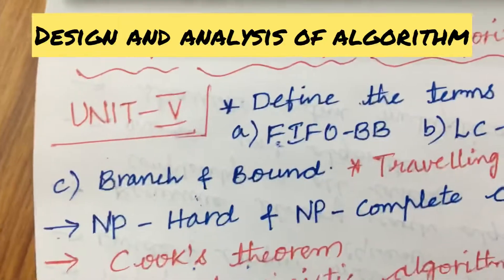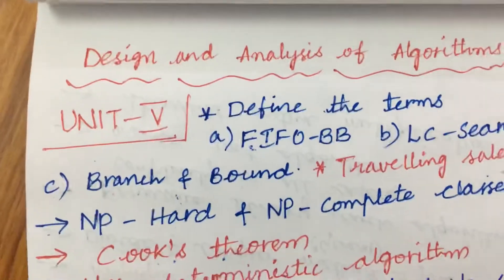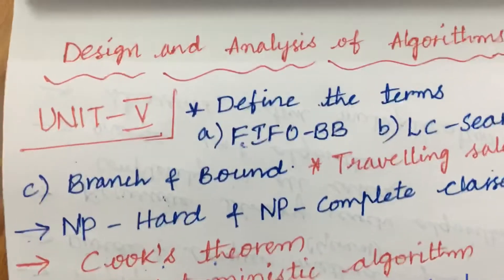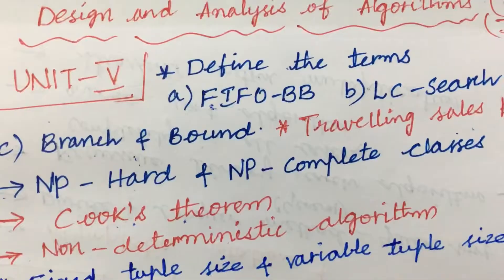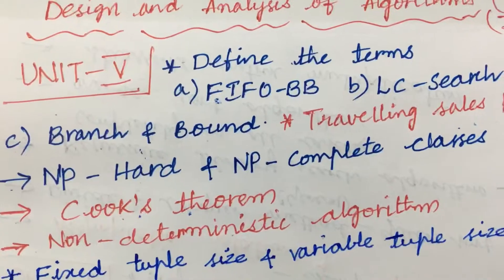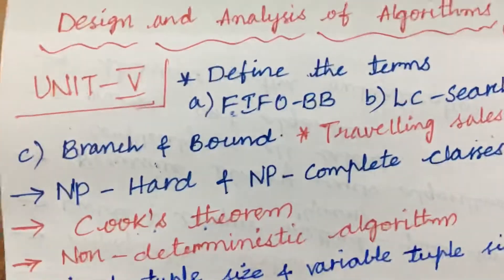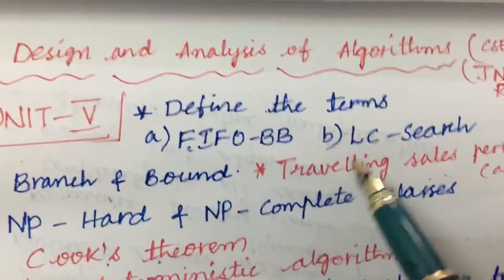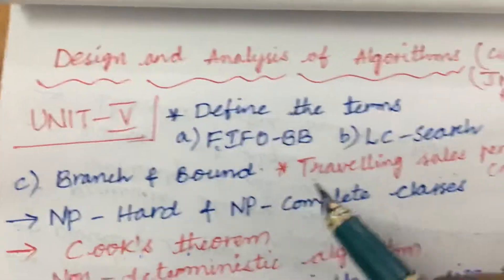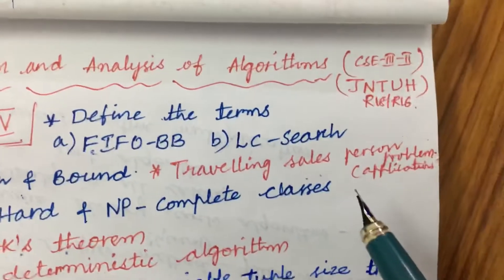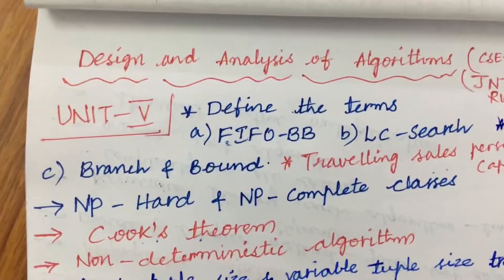I have started with Unit 5 here for this course because you are going to take your internal examination, and one question for sure from these concepts will appear even in the external examination. The first and foremost topic is: define the terms FIFO Branch and Bound, LC Search, Branch and Bound, as well as the Traveling Salesperson's Problem and its application — this is one of the 7-mark questions repeatedly asked in previous year question papers.